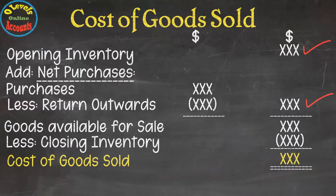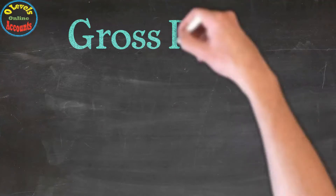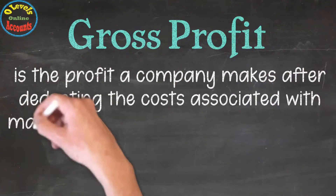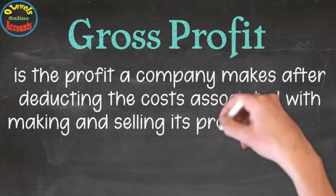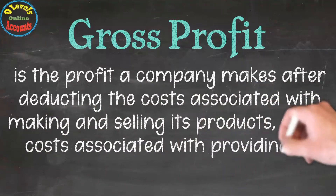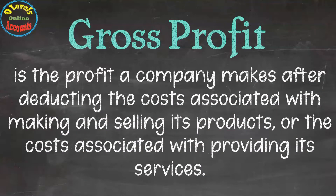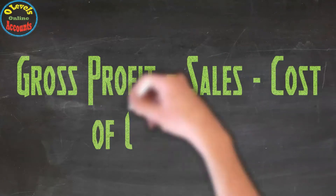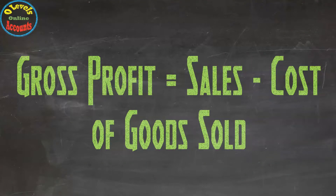Now move to gross profit. Gross profit is the profit a company makes after deducting the costs associated with making and selling its products, or the costs associated with providing its services. The formula is: gross profit equals sales minus cost of goods sold. Before calculating in detail, let's review some important relationships regarding the trading account.